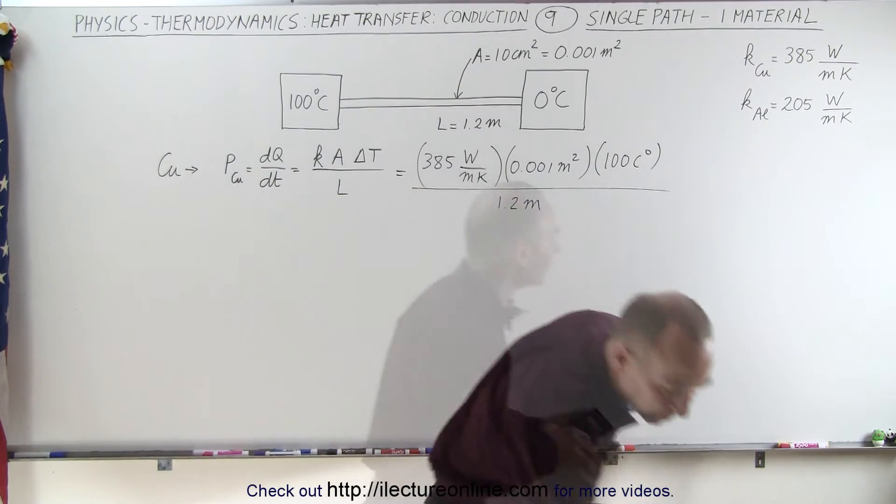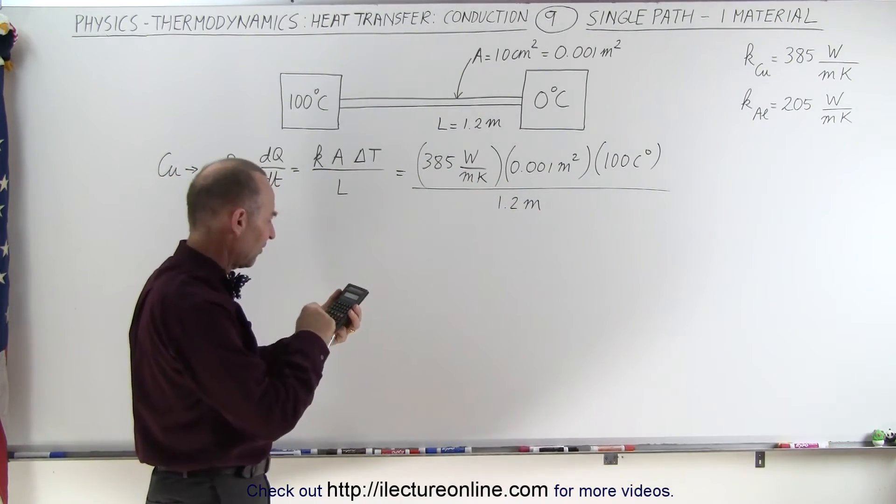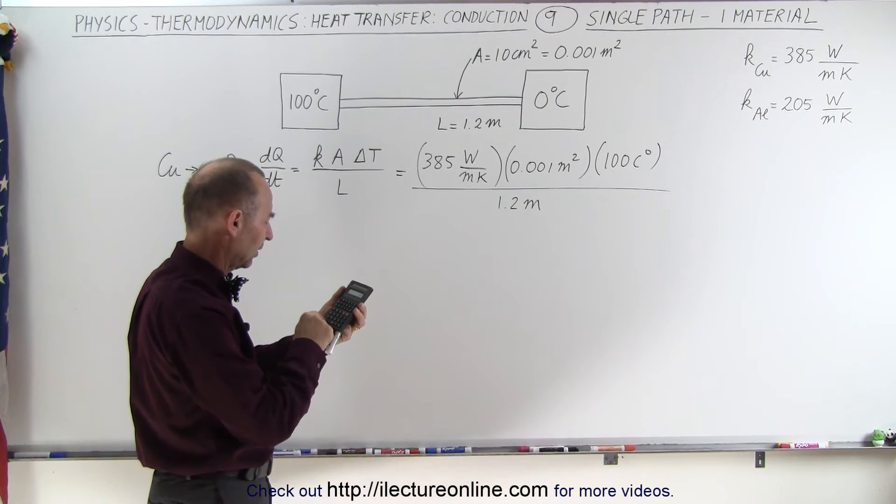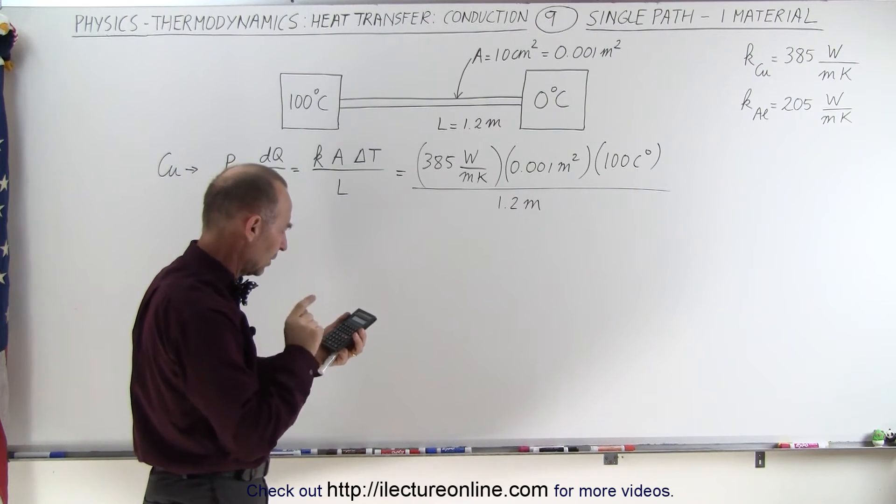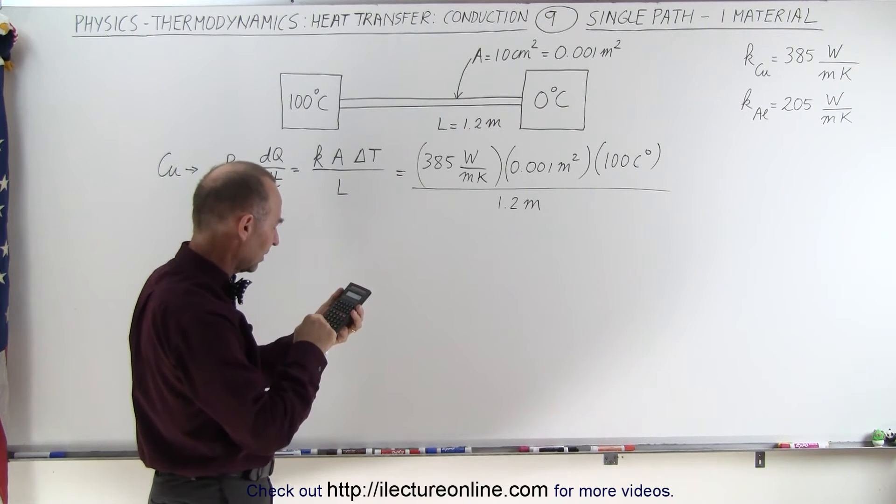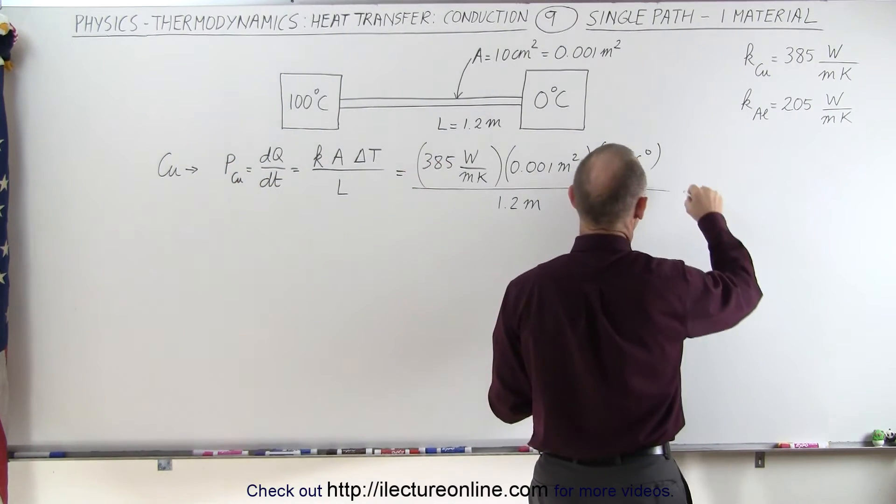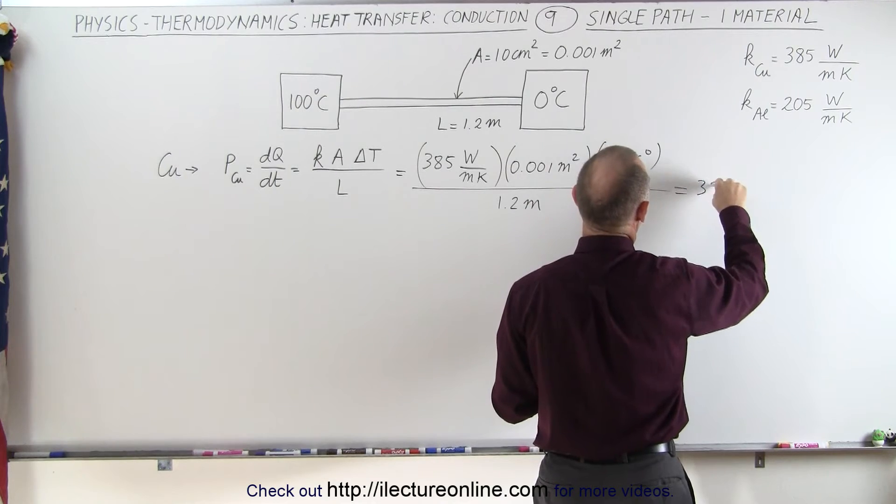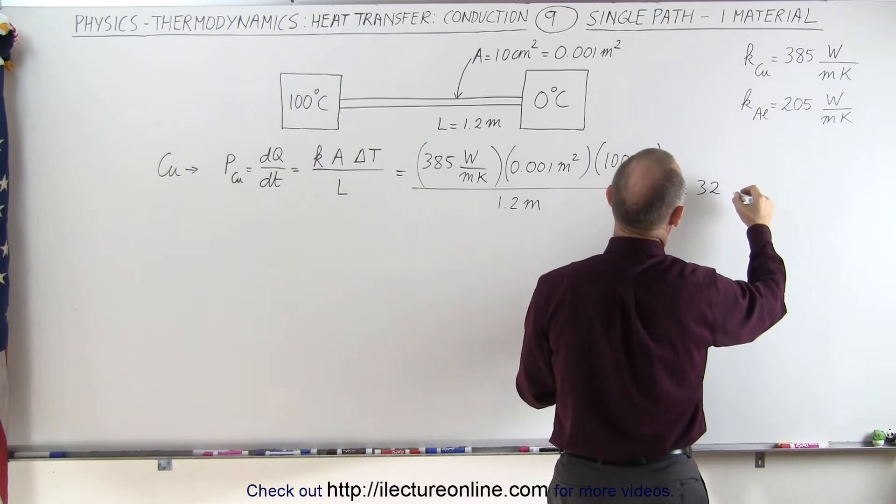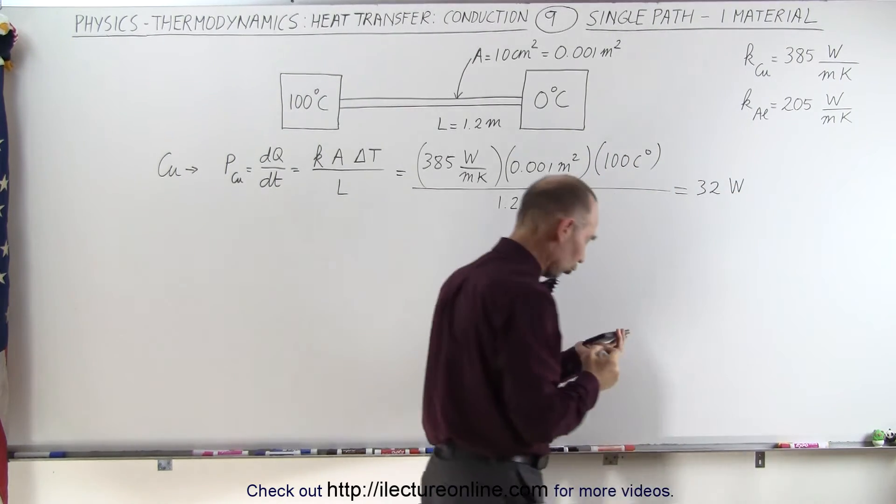Now with the calculator, we get 385 times 0.001 times 100 divided by 1.2. Let's try it again, 385 times 0.1 divided by 1.2 equals, there we go, 32.08. Now we'll just call it 32 watts, or joules per second.